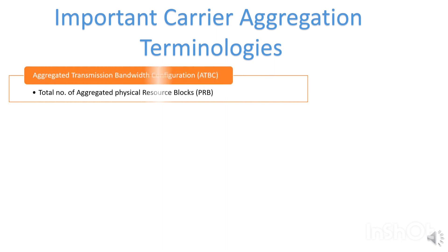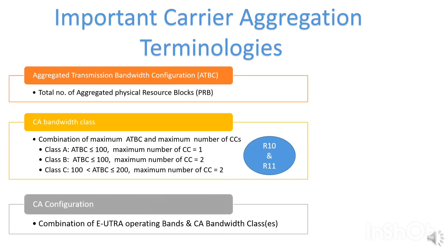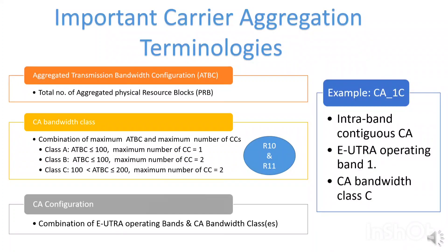To specify different carrier aggregation combinations, some new definitions are defined in 3GPP. First is aggregated transmission bandwidth configuration, or ATBC, defined as the total number of aggregated physical resource blocks, or PRB. Second is carrier aggregation bandwidth class, which indicates a combination of maximum ATBC and maximum number of component carriers. In Release 10 and Release 11, three classes are defined: class A, class B, and class C, depending on the number of ATBC and component carriers. The third is carrier aggregation configuration, which indicates a combination of a UE operating band and CA bandwidth class. For example, the configuration CA_1C indicates intra-band contiguous carrier aggregation on UE operating band 1 and carrier aggregation bandwidth class C. Carrier aggregation configurations are defined in Release 11, modified with later releases in 3GPP.